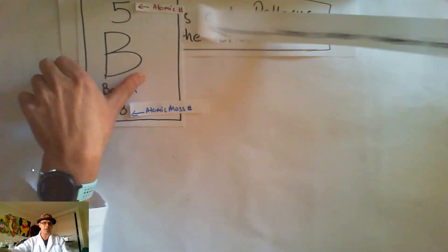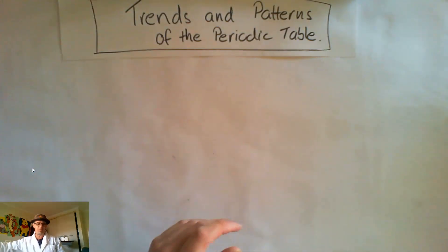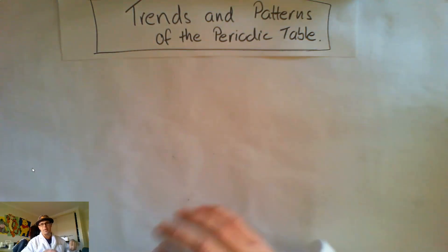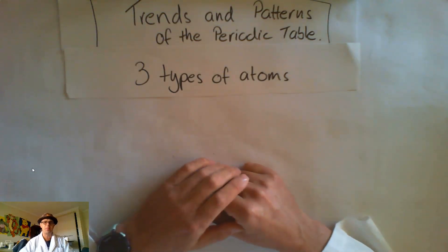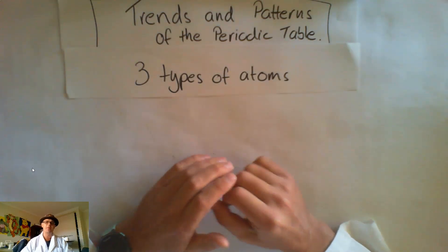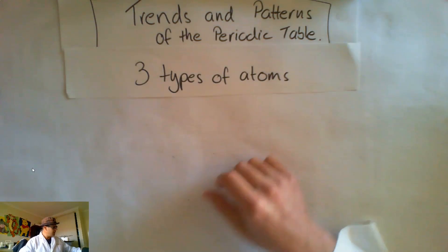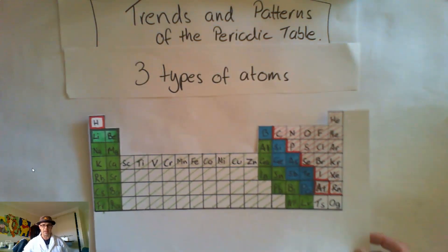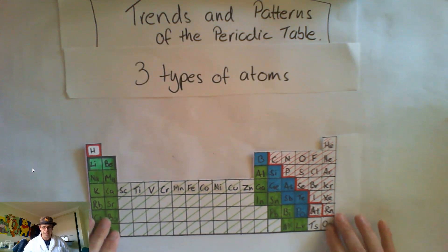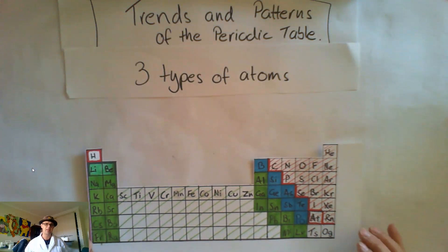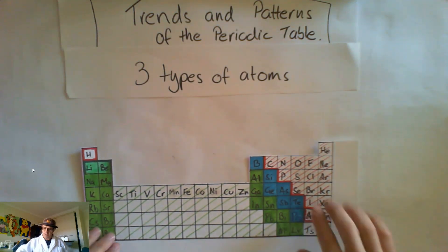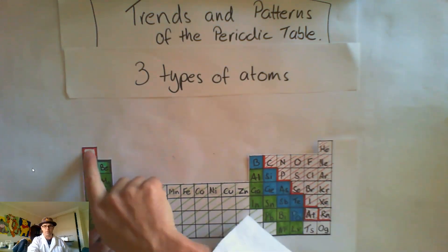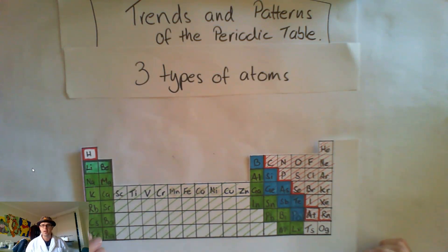We'll start talking about one of the first trends or patterns on the periodic table. Let's start with the basics. When we start talking about the periodic table, there are three different types of atoms. Let's bring in the periodic table I prepared earlier. As you can see, I've got them colored in a few different colors. I've got red here and red over here for hydrogen — they are our non-metals.